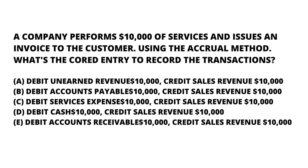For today's question, let's start: a company performs ten thousand dollars of service and issues an invoice to the customer using the accrual method. What is the correct entry to record the transaction? We have five options. Option A: debit unearned revenue with ten thousand dollars and credit sales revenue with ten thousand dollars. Option B: debit accounts payable with ten thousand dollars and credit sales revenue with ten thousand dollars.